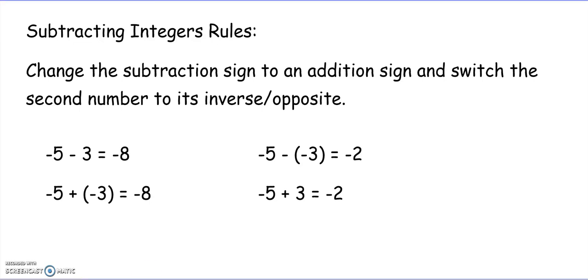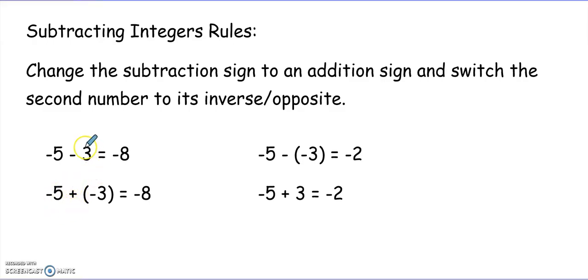The subtracting integer rule: change the subtraction sign to an addition sign and switch the second number to its inverse or opposite. So for negative 5 minus 3, I change the subtraction sign to addition and switch positive 3 to negative 3. Then using addition rules, negative 5 plus negative 3 is negative 8.